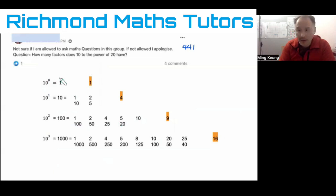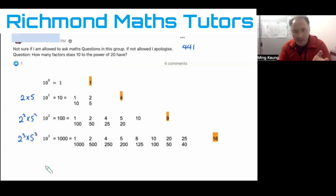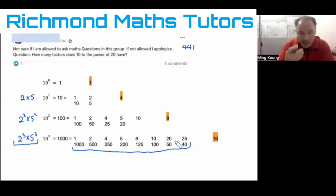10 to the power of 0 equals 1 — I can't really prime factorize that. 10 to the power of 1 equals 10, and when I prime factorize that, it becomes 2 times 5. 10 to the power of 2 becomes 2 squared times 5 squared. And 10 to the power of 3 would be 2 cubed times 5 cubed. Most students would eventually learn this at some stage.